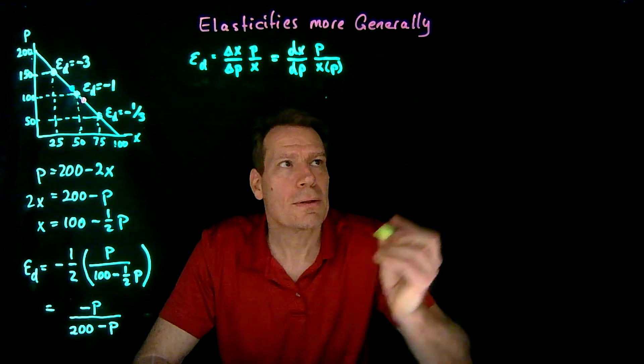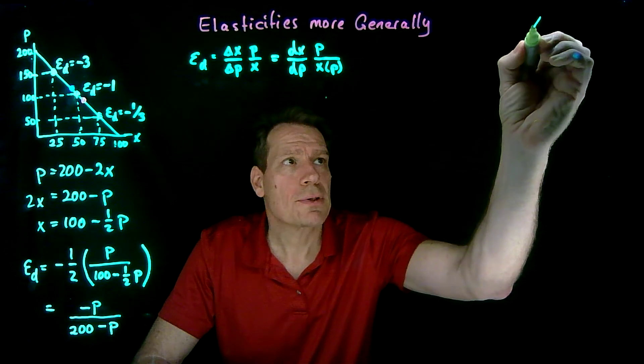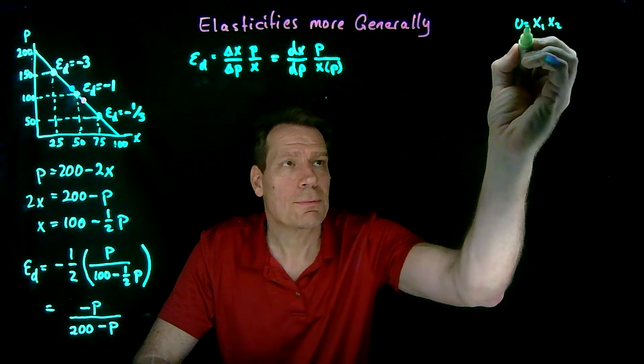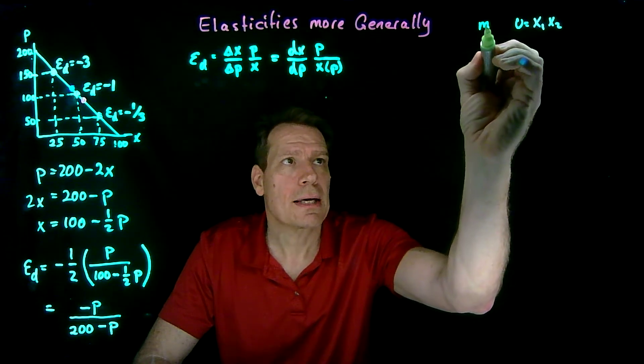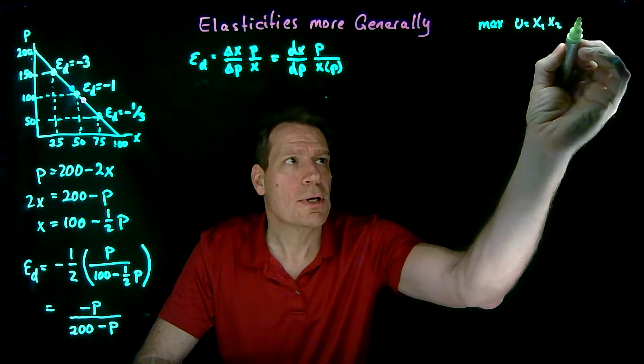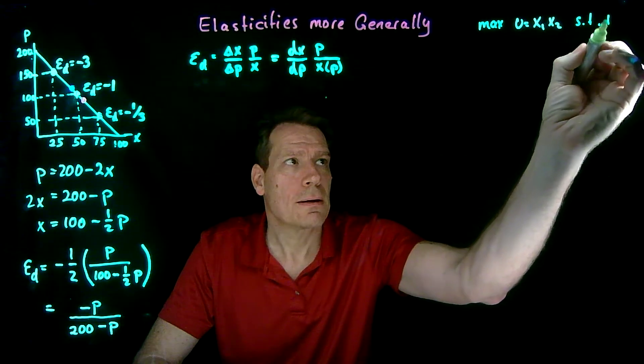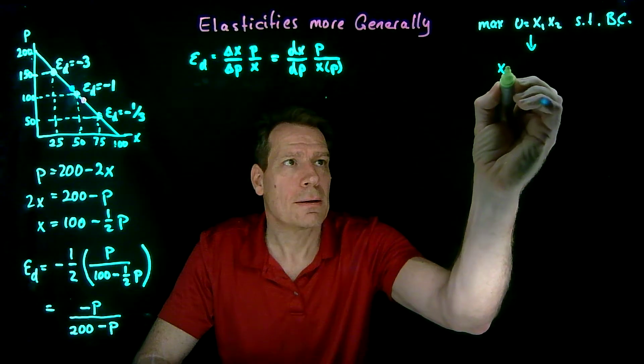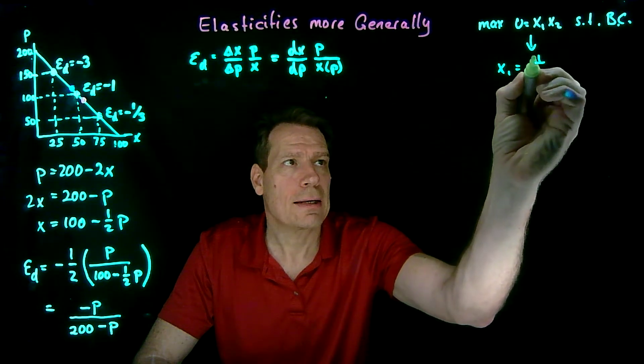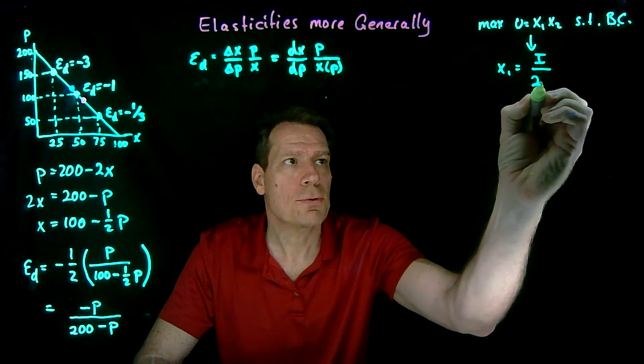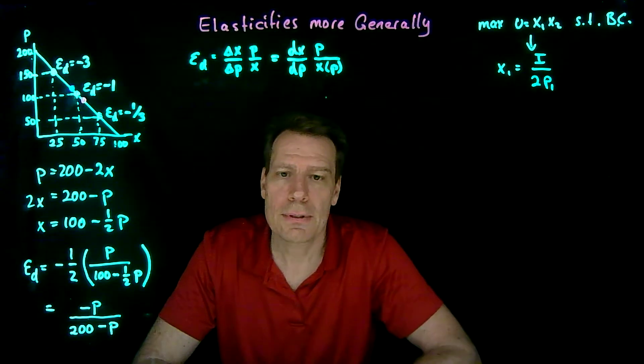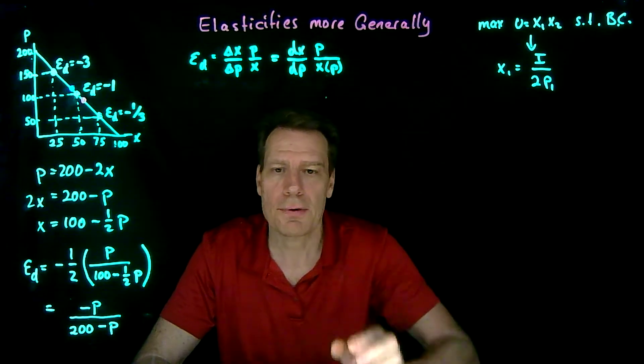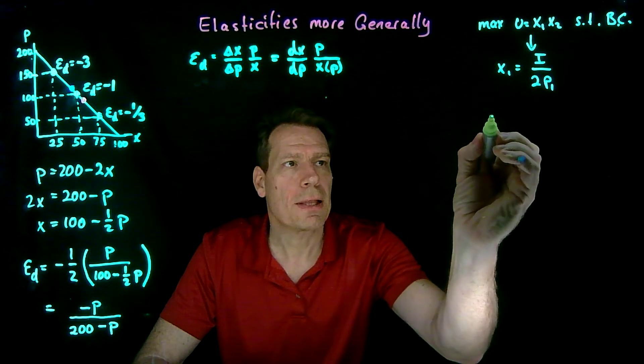Well, remember then that when we had an indifference map that we represented by the utility function x1, x2, when that was our utility function, and when we maximized that subject to the budget constraint, we got a demand function for x1 that was equal to income divided by 2p1. So that's a demand function. We can now figure out what's the price elasticity of that demand function. We just apply our formula.